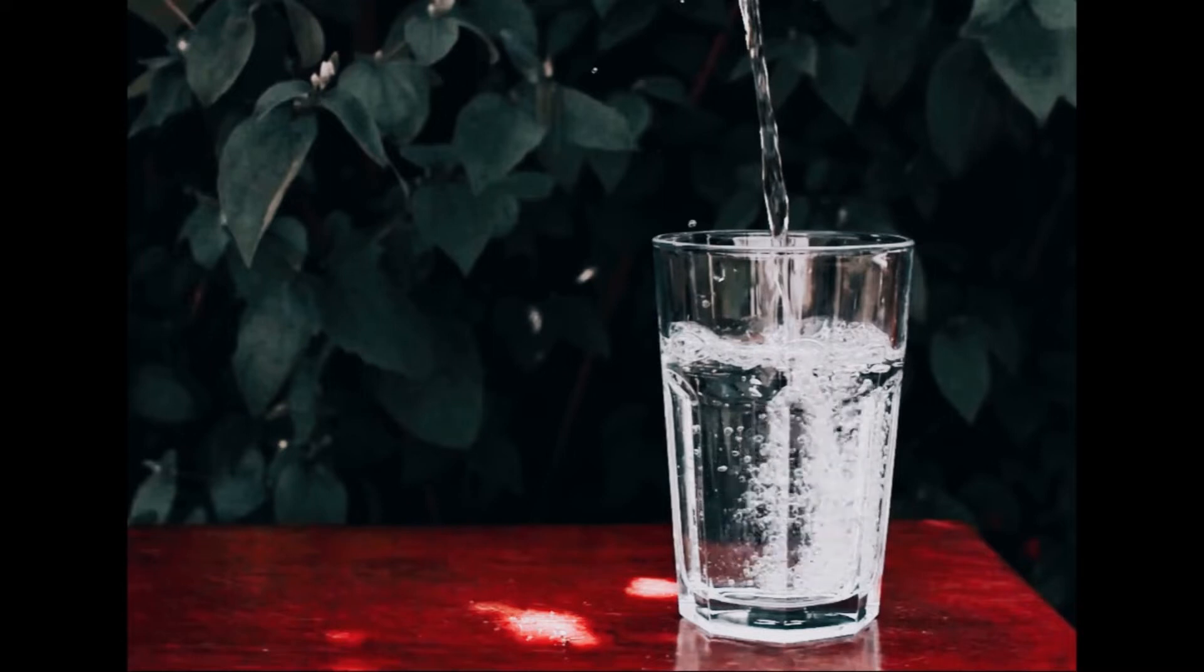2. Filtered water. Some people prefer to use water filters to remove impurities, such as chlorine, sediment, or heavy metals, from tap water. There are various types of water filters available, including pitcher filters, faucet filters, and under-sink filtration systems.